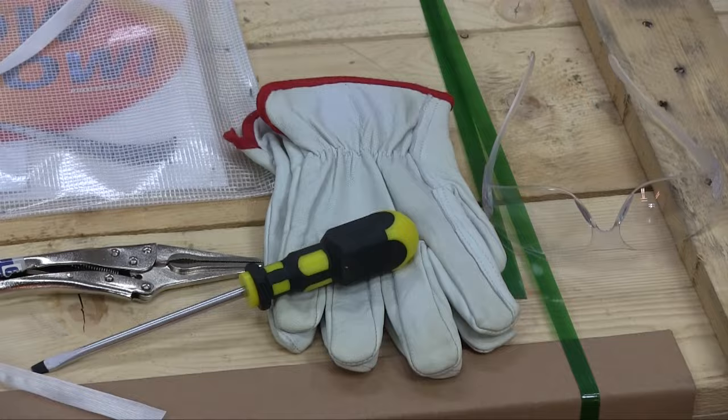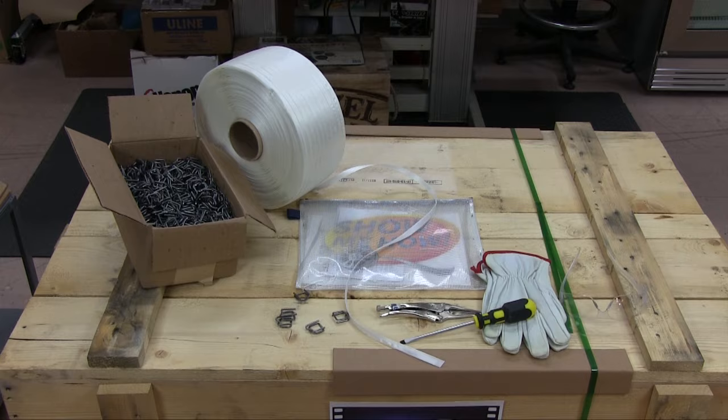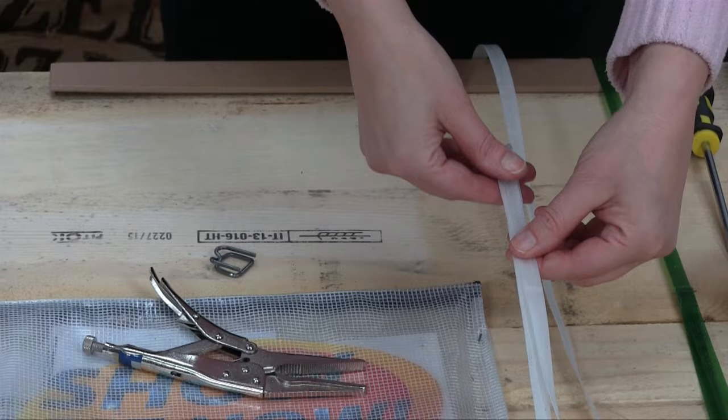This video segment is on threading metal buckles to secure strapping. You can use buckles on cord strap or polypropylene strapping.